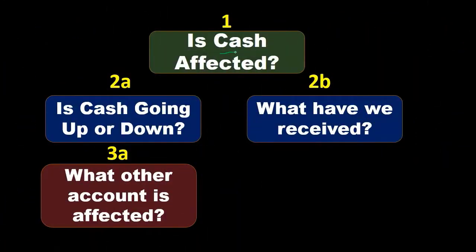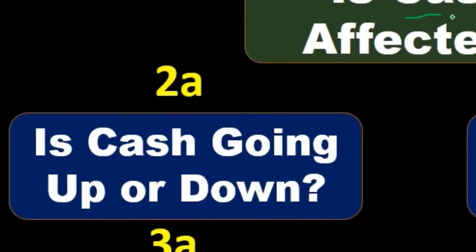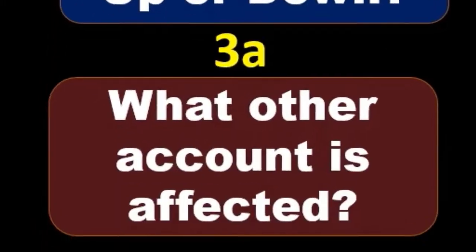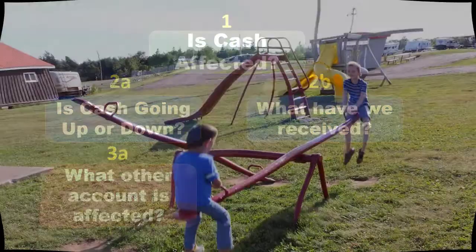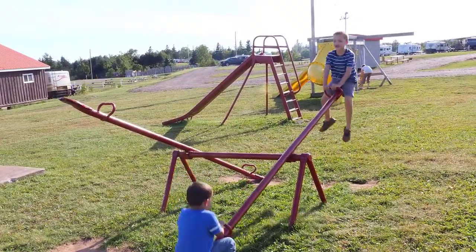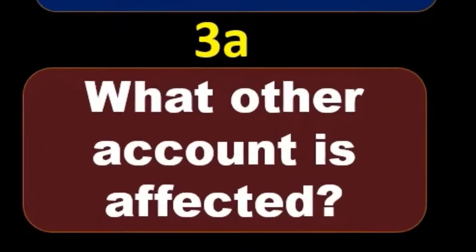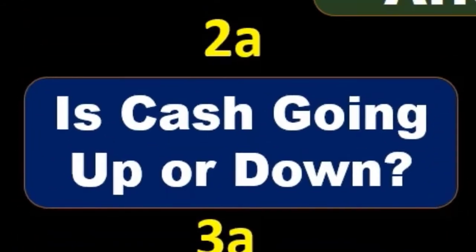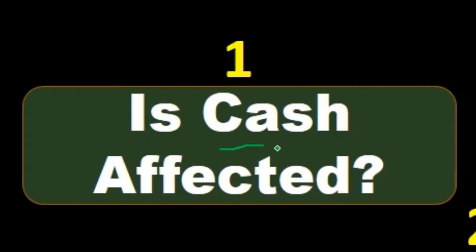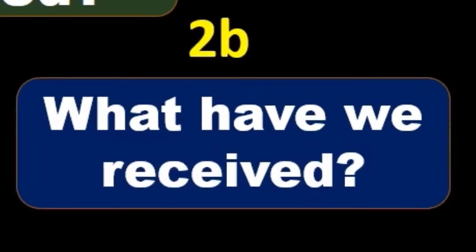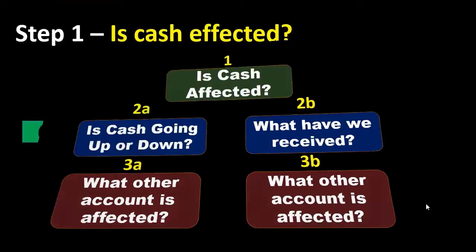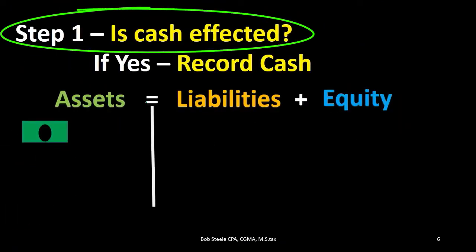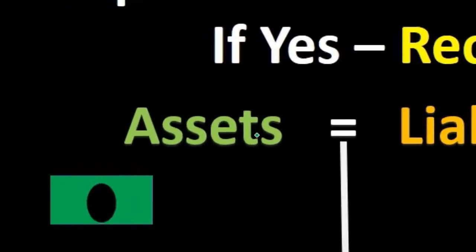What if cash is not affected? For those transactions where cash is not involved, we want to think about what did we get — often something like supplies or an expense. If we're getting an asset, it acts similarly to cash, so it's going to be easier to know whether it's going up or down. Once we have that, we can use that knowledge of the received account increasing or decreasing to help understand what we should do to the other account that will be affected.